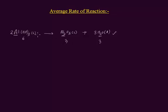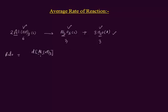Let us write the expression for the average rate of reaction for this balanced equation. We know that the average rate of reaction is the change in the concentration of reactant and product per unit time. Rate is equal to the change in the concentration of reactant, which is Aluminum hydroxide. D refers to change or difference, so D[Al(OH)₃] divided by dT represents the change in the concentration of reactant per unit time. This is the expression for the rate of decomposition of reactant.